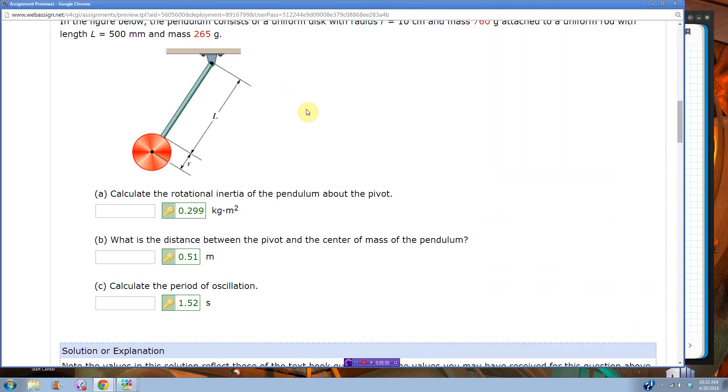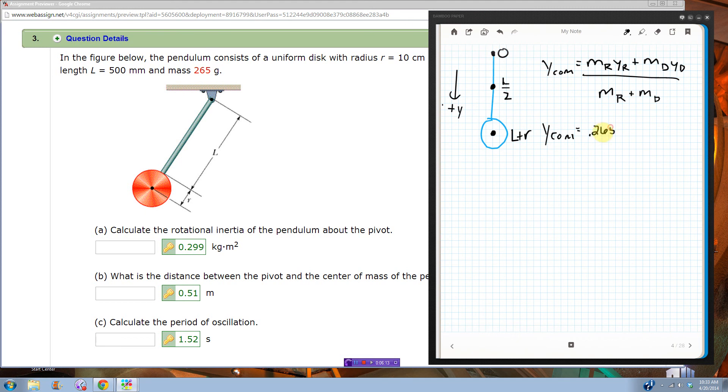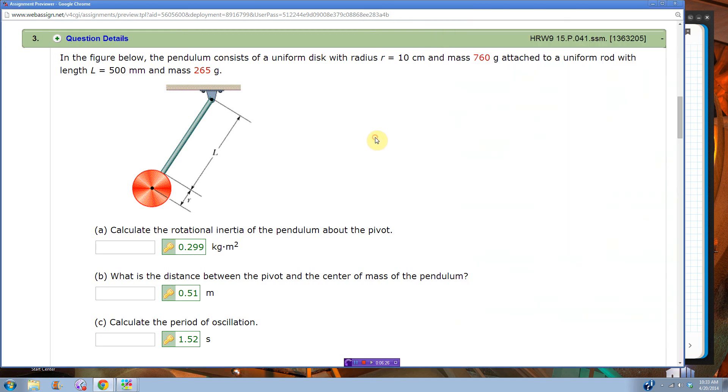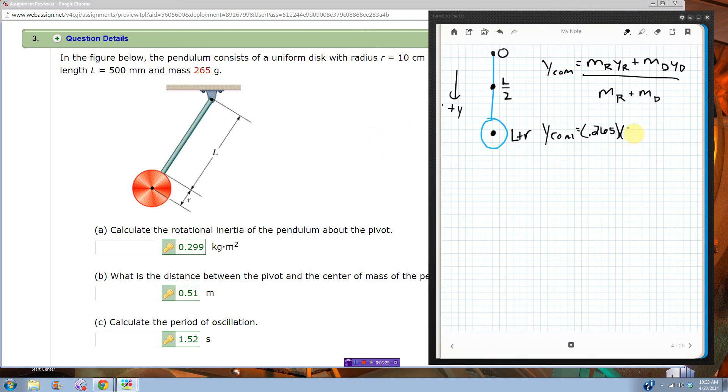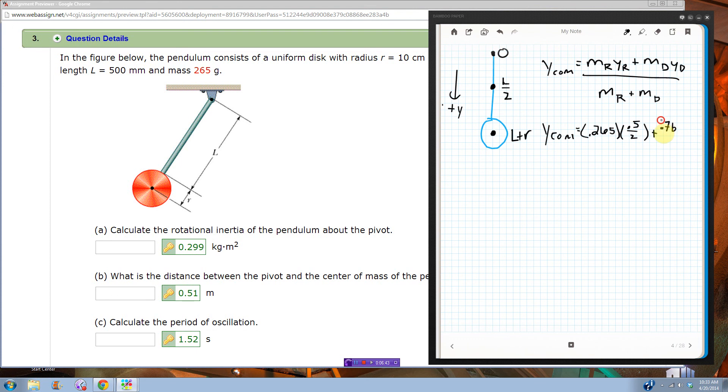So that gives me mass of R is, that's the 760, oh no wait, sorry, mass of the rod, mass of the uniform rod is L, there it is. So the rod is 0.265 again, 0.265, Y of the rod is L over 2, oh, which I know, so let me just put that in. L over 2, L was 0.5, so it's going to be 0.25, oh, I'll just put it in like this, 0.5 over 2, okay? Okay, plus the mass of the disc is 0.76, times, we already did that, that's 0.6, okay? All over mass of the rod plus mass of the disc.